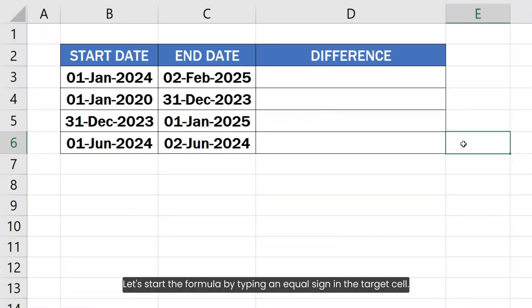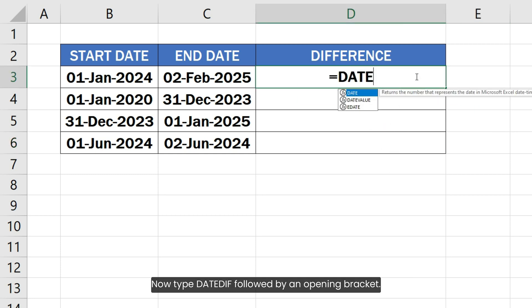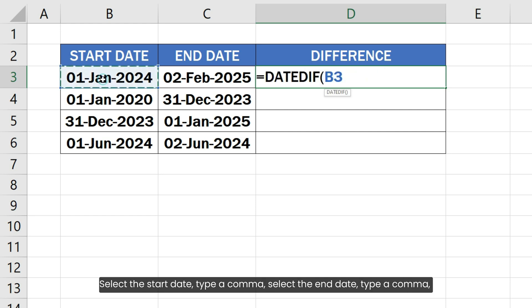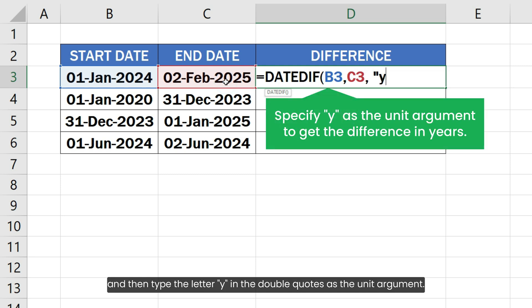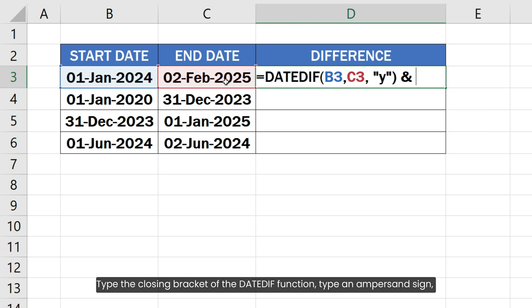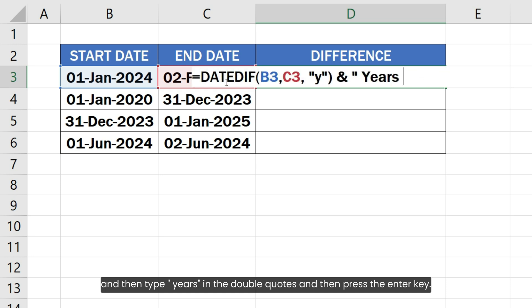Let's start the formula by typing an equal sign in the target cell. Now type DATEDIF followed by an opening bracket. Select the start date, type a comma, select the end date, type a comma and then type the letter y in double quotes as the unit argument. Type the closing bracket, type an ampersand sign and then type years in double quotes and press the enter key.